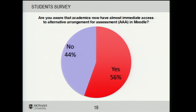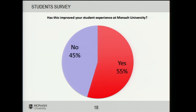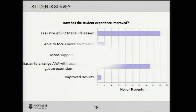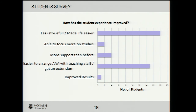We did a survey of both staff and students in semester one this year. 117 students completed the survey. We asked if they were aware that academics now have almost immediate access to AAA information in Moodle — more than half said yes. Has this improved their student experience at Monash? More than half said yes. The majority felt it's less stressful and has made their life easier, and they find it easier to arrange AAA with teaching staff or get an extension on assessments.